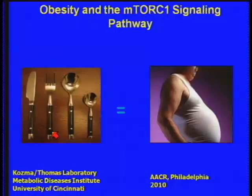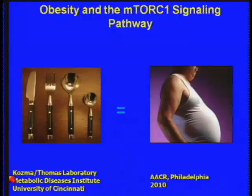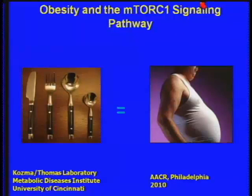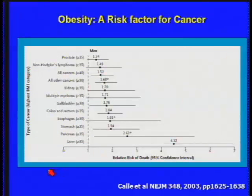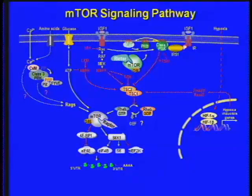This is actually a slide from one of my colleagues at the GRI, Randy Seeley, who works on energy balance in the animal. He calls these the tools of mass destruction. I call them the tools of mass construction leading to obesity. You've already heard earlier on that obesity has been shown to be a high risk factor for a number of tumor types. This is in males, and specifically here, we're going to be talking about liver cancer where there's a five-fold higher effect.